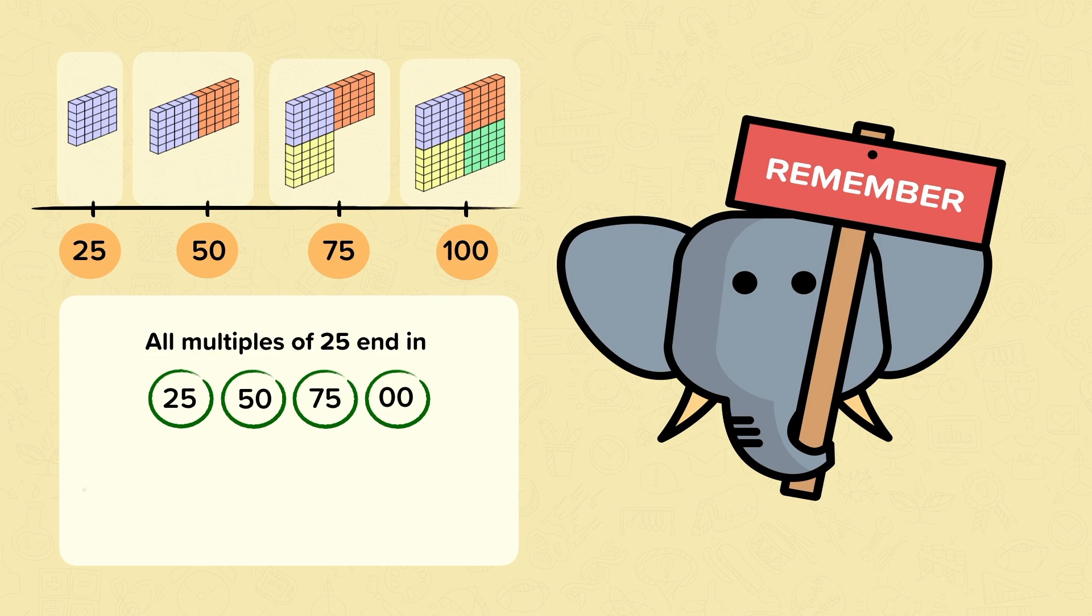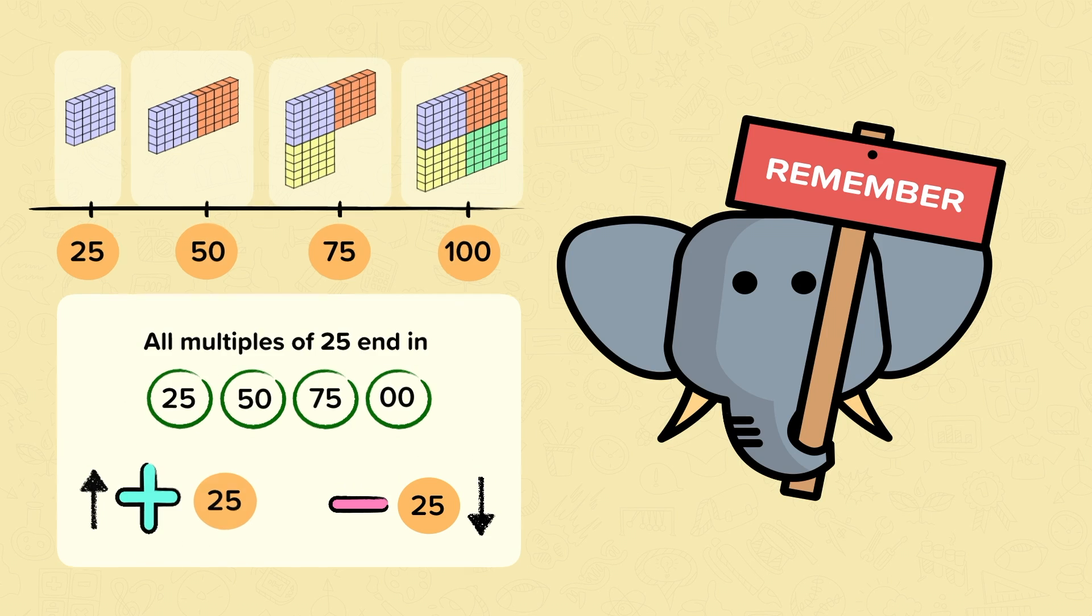To count up in multiples of 25, add 25 each time. To count down in multiples of 25, subtract 25 each time.